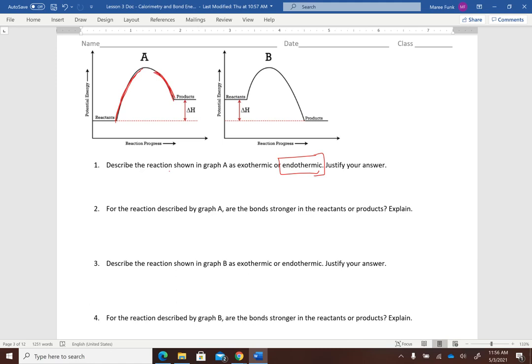It then asks us are the reactants bonds stronger or the product bonds? Since this is where we see the greatest energy change over here, the reactants would have stronger bonds. Now notice that each question says justify or explain, so be sure you're doing that.